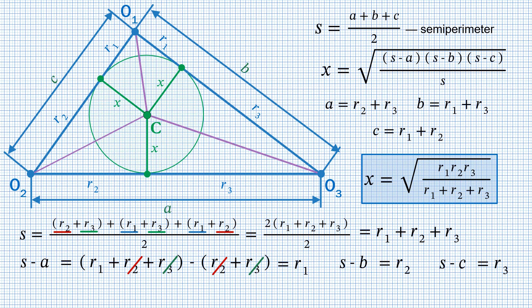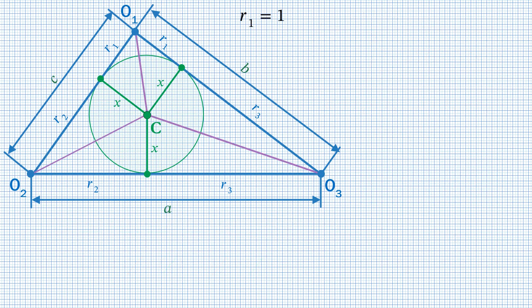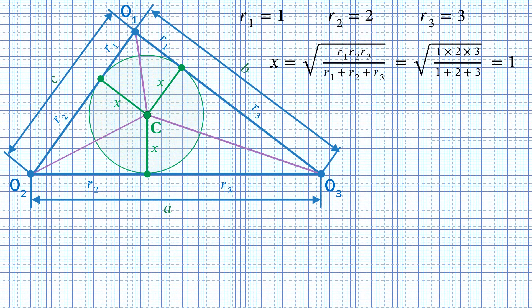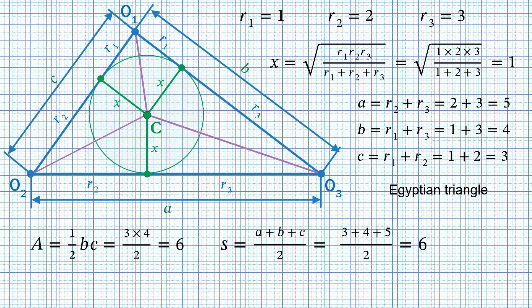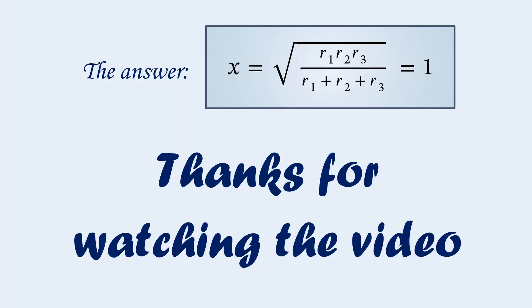Here is the final formula for the radius of the green circle. Substituting R1 equals 1, R2 equals 2, R3 equals 3 gives X equals 1. However, in this particular case we can get away without Heron's formula. The sides of the triangle are A equals 5, B equals 4, C equals 3 — the famous Egyptian triangle, which is right-angled. Therefore the area is simply half the product of the two shorter sides, which is 6, and the semi-perimeter is also 6. The radius is again 1. This is consistent, this is great, and this is the end.